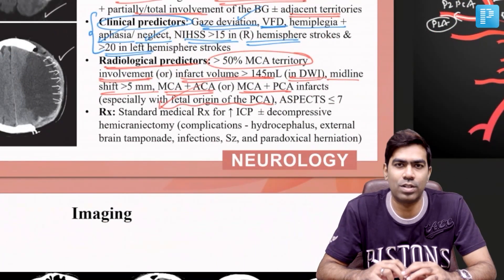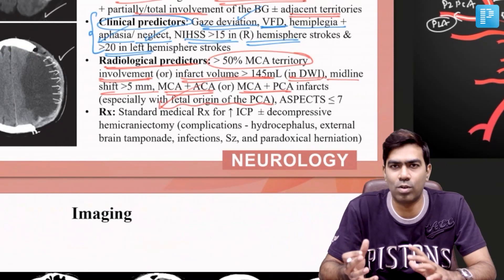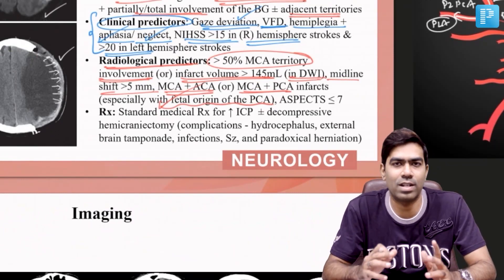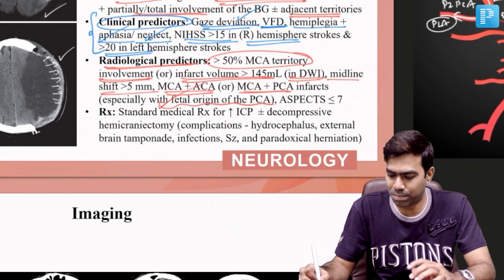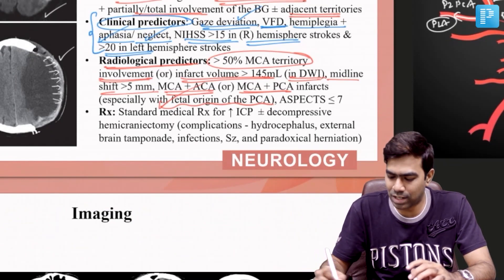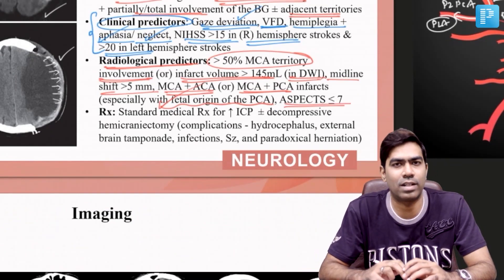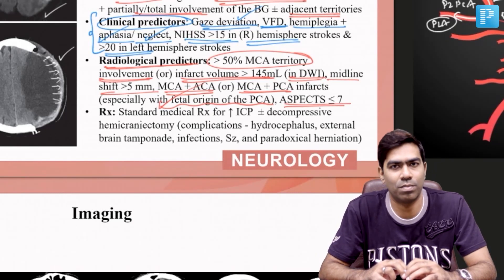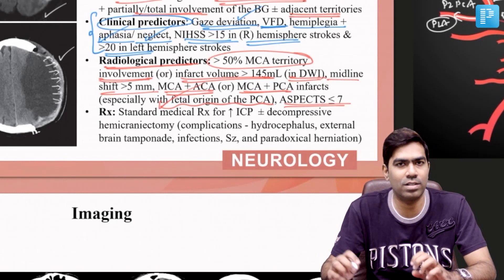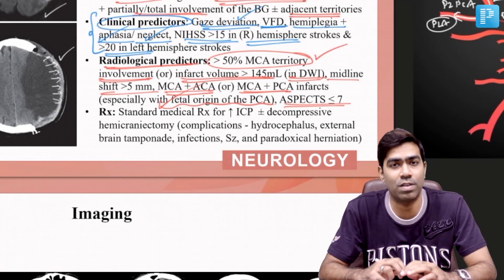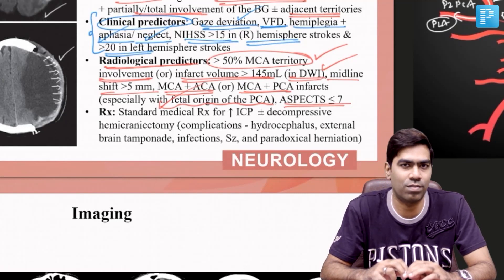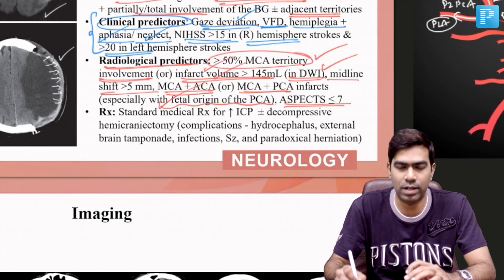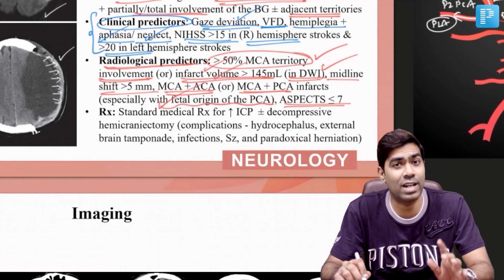This is the most common situation where you get multiple territorial infarcts like MCA and PCA together — whenever there is a fetal origin of the PComm or PCA. If the ASPECTS score is less than or equal to seven, that also predicts a large stroke and subsequent malignant cerebral edema. The most important predictors remain: more than 50% MCA territory involvement and infarct volume greater than 145–150 mL — both used in the ASPECTS criteria.